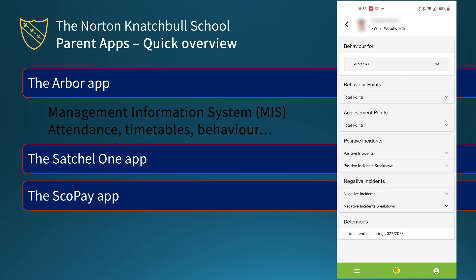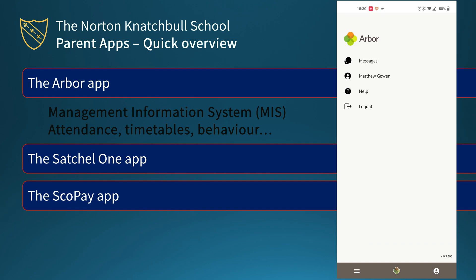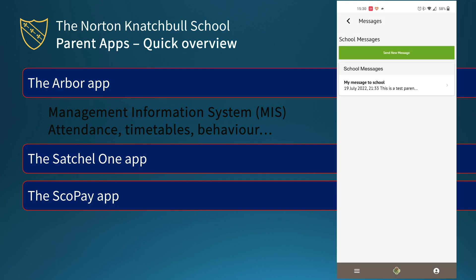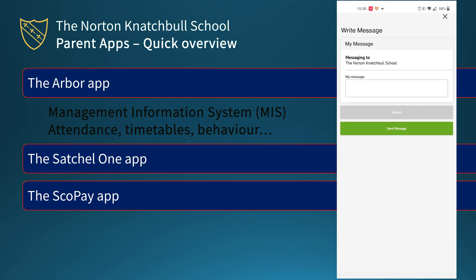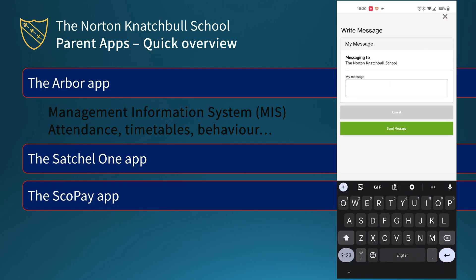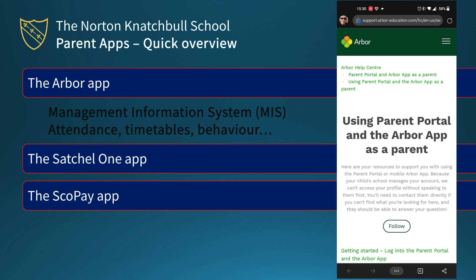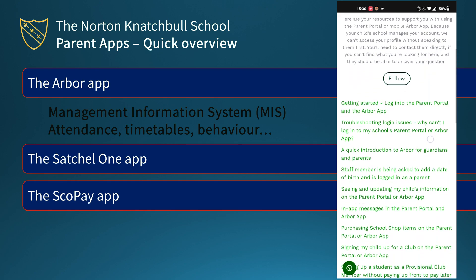Behaviour covers behaviour, achievement, and attentions. Because this is the start of the school year, there aren't any particular incidents here, but they will expand automatically should there be any. The messages section allows you to create a message — a test message to make sure the system was working. You can click 'Send a Message' and tap in a message which will automatically be emailed through to information at nks.kent.sch.uk. Under 'My Account' you can also click 'Help', which takes you to the Arba support page and tells you anything you need to know about using Arba.